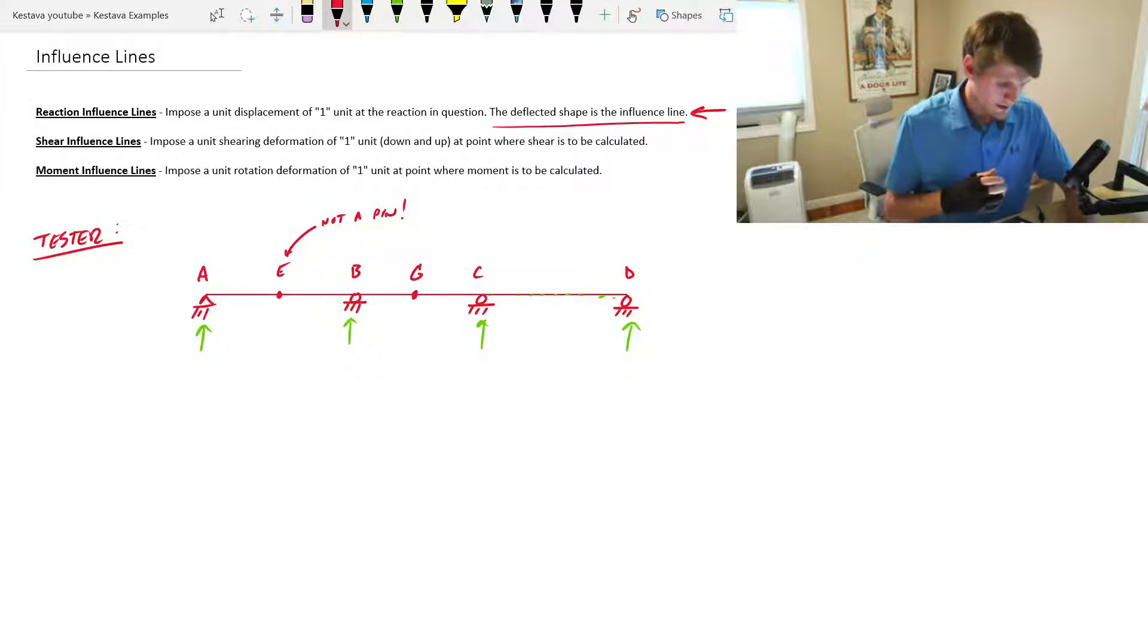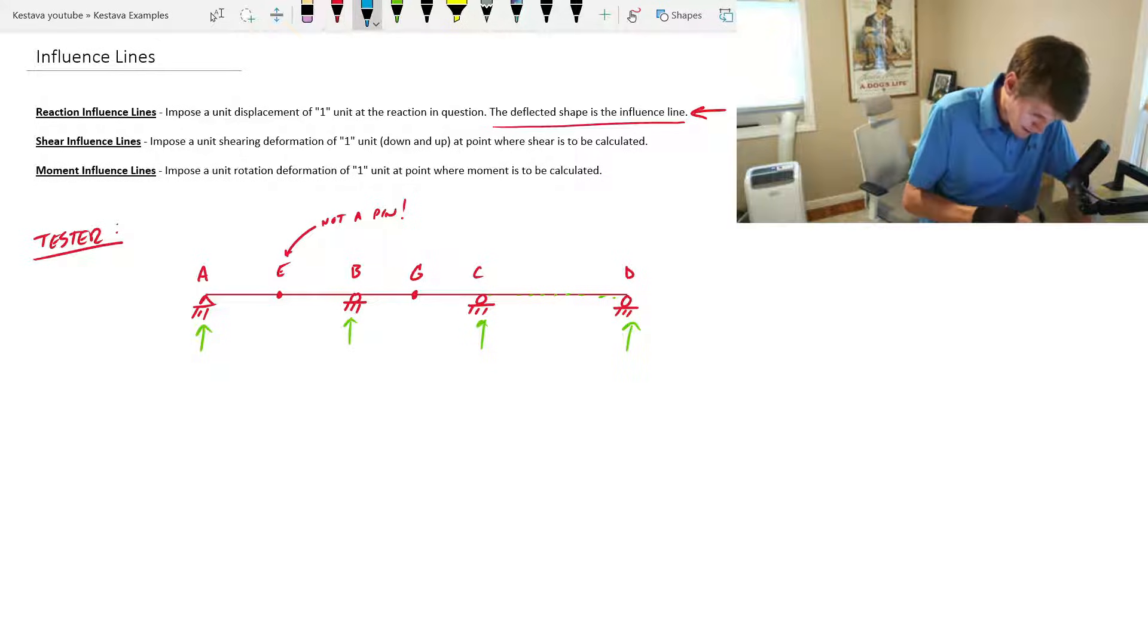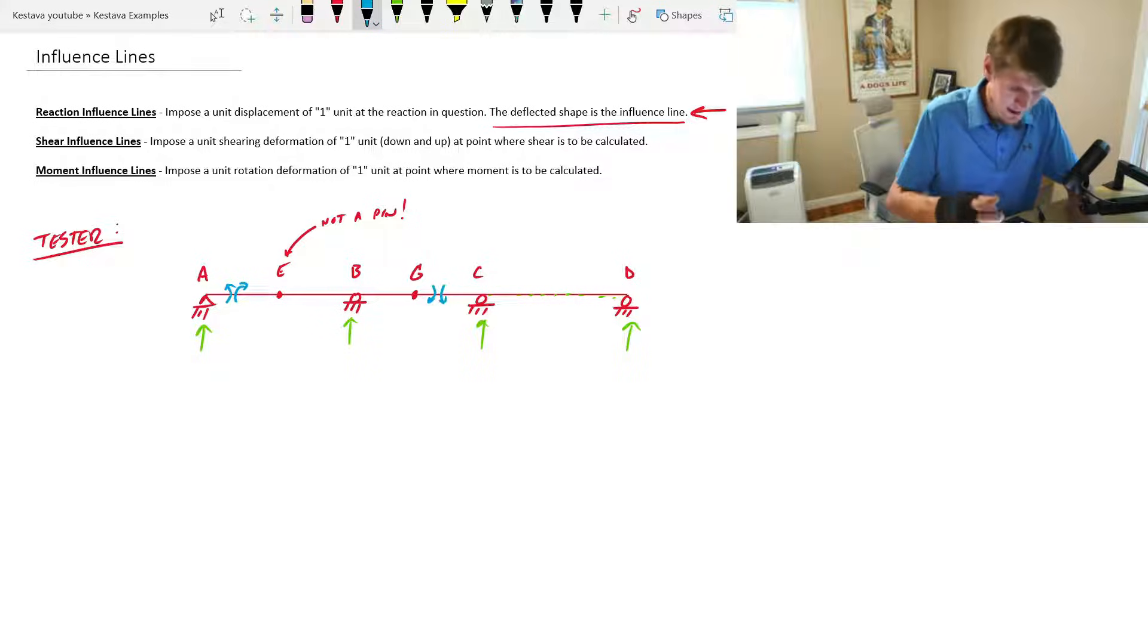And then lastly, moment influence line. This one I think is, for me personally, the most difficult of the three. This is where you impose a unit rotation deformation. That sounds scary, but it's not too bad, of one unit at the point where the moment is to be calculated. Same thing: if we want moment here, if we want moment over here, et cetera, et cetera.